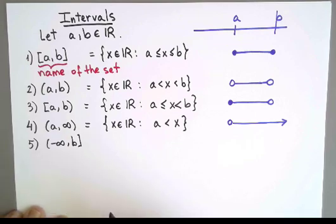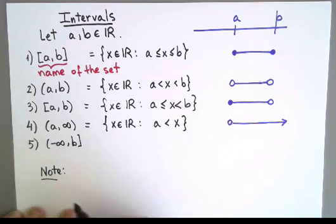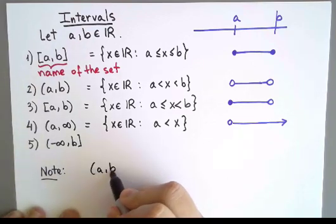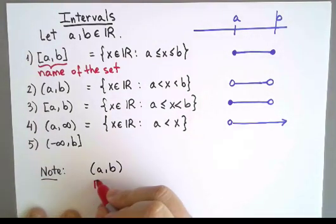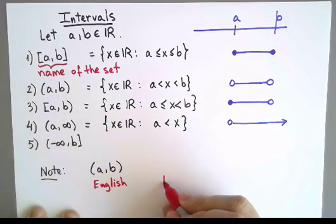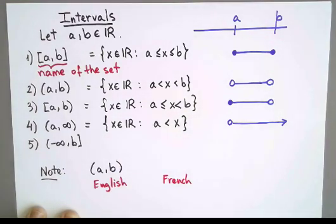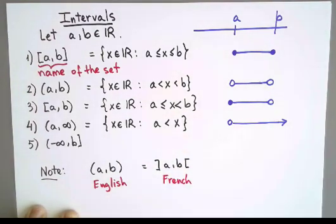To conclude, a note of caution. This is the way I've been writing an interval for which I do not include the endpoints. This is the common notation in English, but if you are in a French-speaking country, chances are you will encounter something slightly different. It's actually just a different piece of notation to mean the same thing.